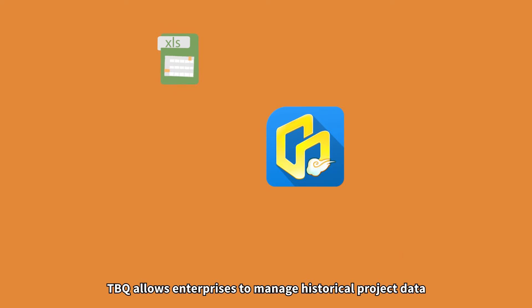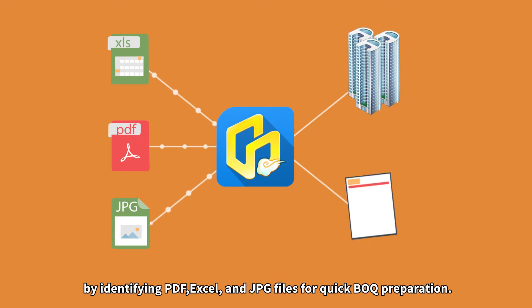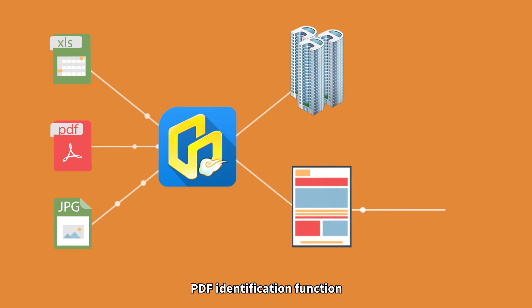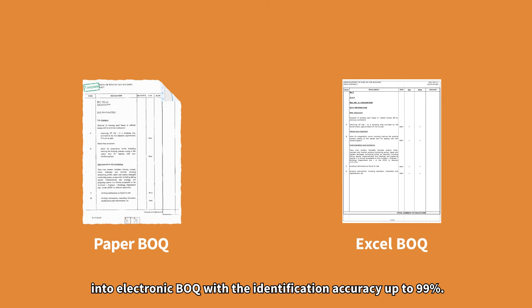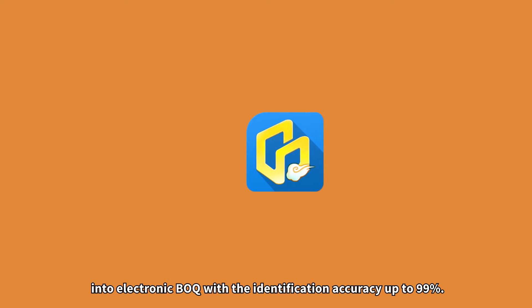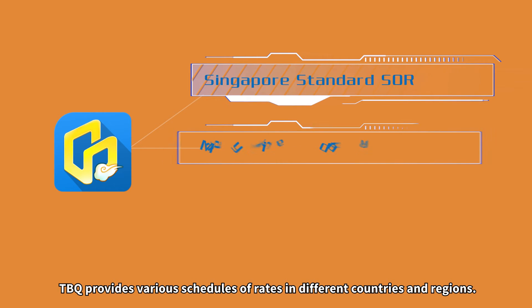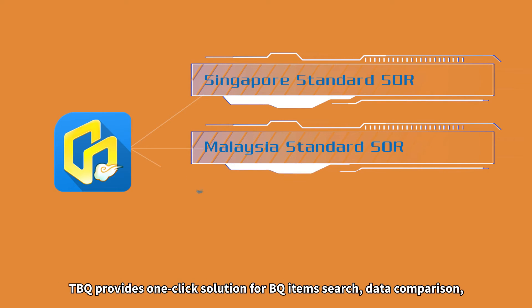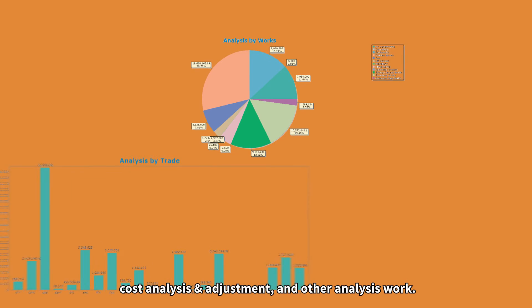TBQ allows enterprises to manage historical project data by identifying PDF, Excel, and JPG files for quick BOQ preparation. The PDF identification function is specially designed for converting paper BOQ into electronic BOQ, with identification accuracy up to 99%. As professional beam-based software, TBQ provides various schedules of rates in different countries and regions, and a one-click solution for BQ item search, data comparison, and cost analysis and adjustment.